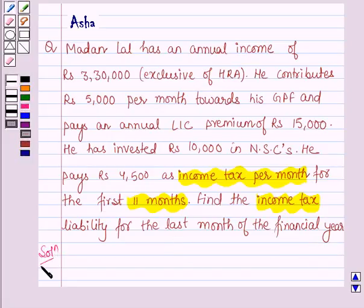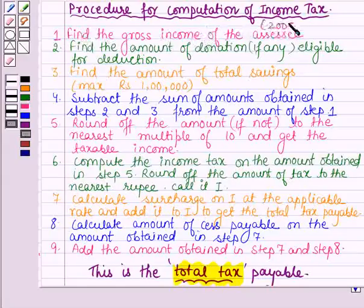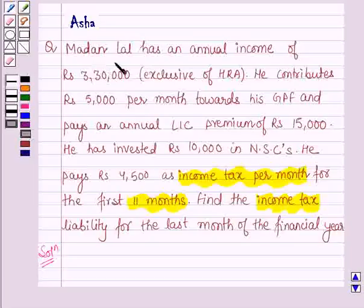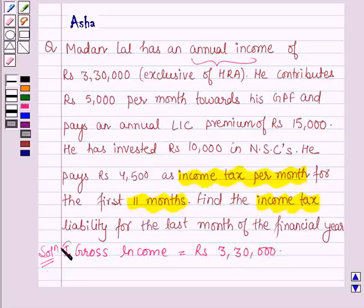Let's start with the solution. We shall be solving this question by following a procedure to calculate the tax for the financial year 2005-2006. The first step is to find the gross income. We are given that the annual income of Madan Lal is rupees 3,30,000, so the gross income is equal to rupees 3,30,000.